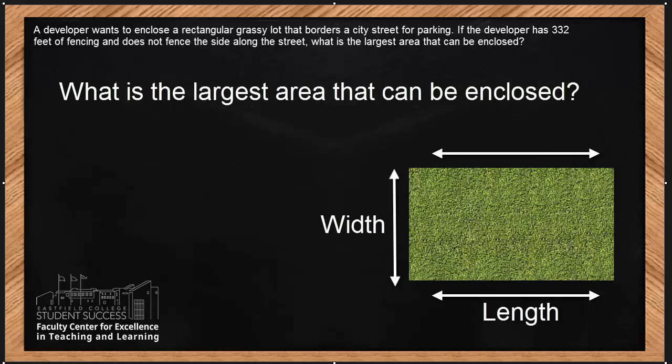If these two opposites are the same, then this is also the length. Now when we're looking for the largest area, the area of a rectangle is represented by the formula length times the width. We also know the developer has 332 feet of fencing. So if we take the L, this length, plus this width, plus another length,